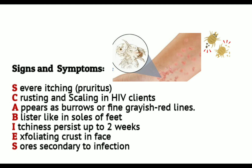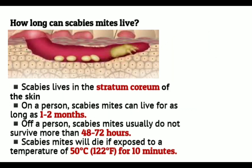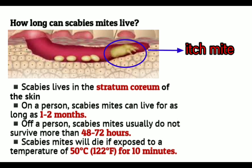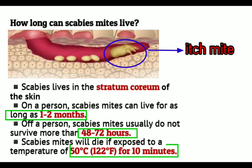How long can scabies mites live? Scabies mites live in the stratum corneum of the skin. On a person, they can live for as long as 1 to 2 months. Off a person — when no longer on the human body — scabies mites usually do not survive more than 48 to 72 hours. They do not live beyond 3 days outside the human body. Also, scabies mites will die if exposed to a temperature of 50 degrees Celsius (122°F) for 10 minutes.